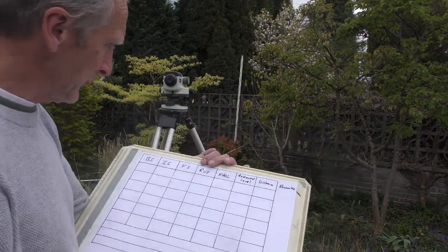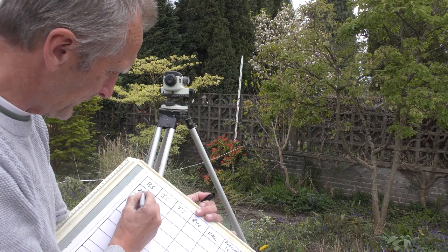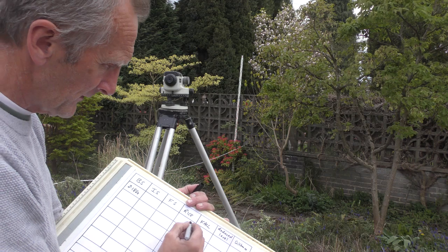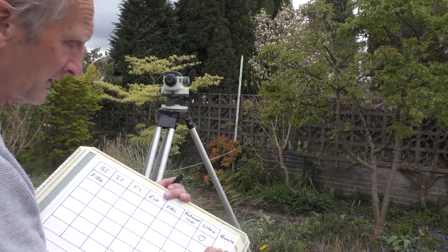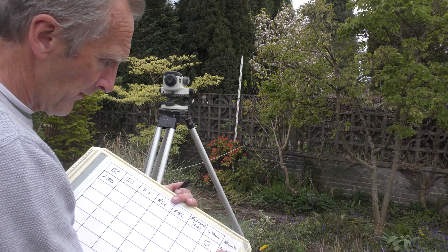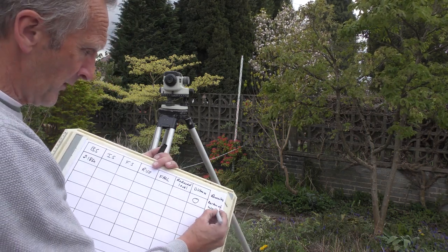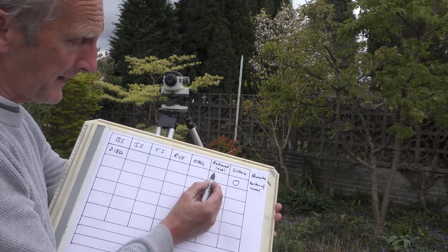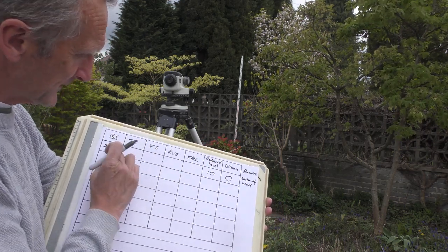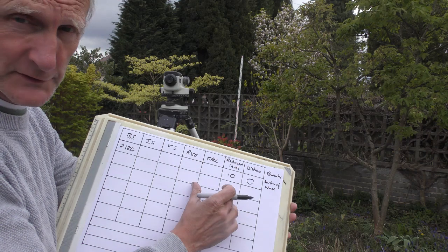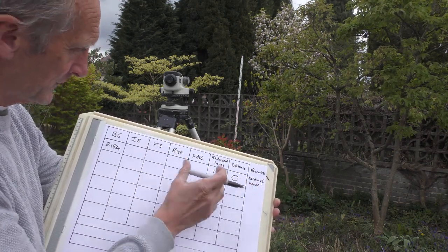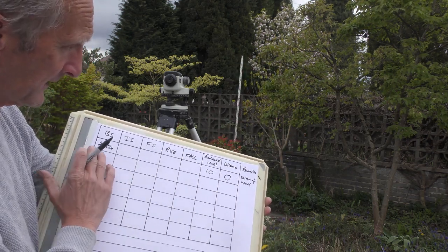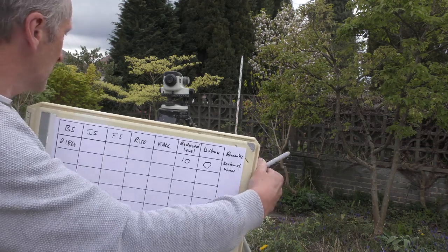Let's have a look at how we book that information. On my board it's a backsight of 2.184, the distance is zero, and the remarks are 'bottom of wall.' For the reduced level we just put in a starting number — I usually use 10 — to stop things going into negatives when we start subtracting. Some people use 100, but 10 is fine on a small area like this where it's only going to go up and down about two meters.